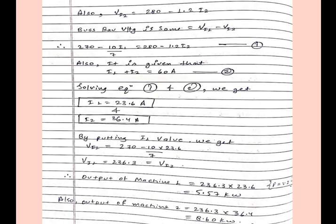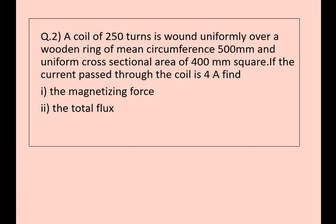Moving to question number 2. A coil of 250 turns is formed uniformly over a wooden ring of mean circumference 500 mm and uniform cross sectional area of 400 mm square. If the current passed through the coil is 4 ampere, find the magnetizing force and the total flux. So very easy solution, and this one is already explained in January 2023 solution, please check playlist.